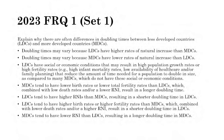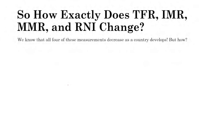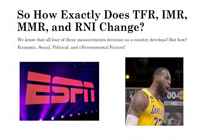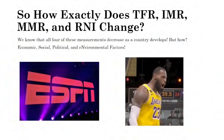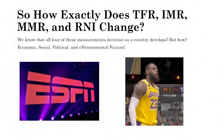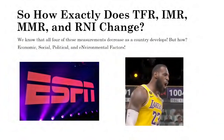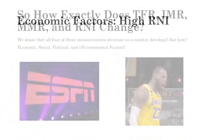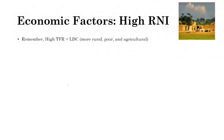TFR, IMR, MMR, and RNI all change due to economic, social, political, and environmental factors. Regarding economic factors that contribute to high RNI and high population growth: high TFR is typically found in LDCs that are more rural, poor, and agriculture-based. Death rates have been decreasing globally; the high population growth in LDCs results from high birth rates combined with declining death rates.